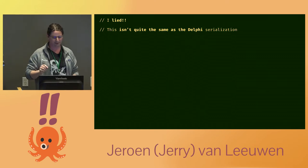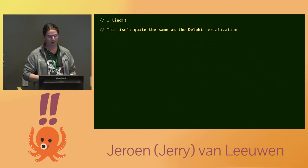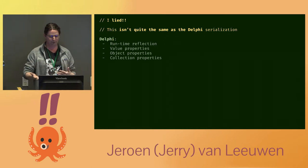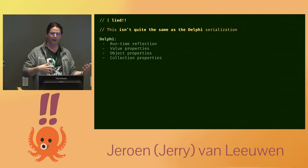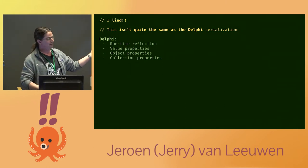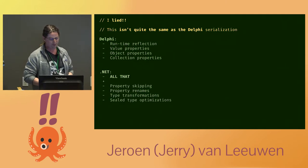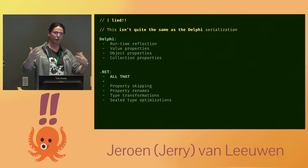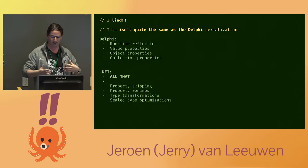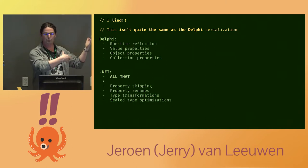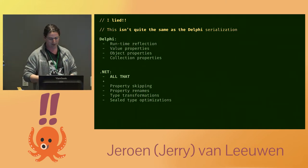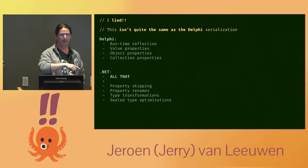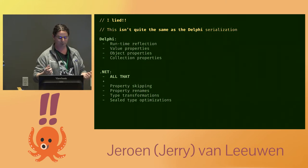I did lie a little at the start — this isn't quite the same as the Delphi serialization we started from. Delphi had runtime reflection, value properties, object properties, and collection properties. But for .NET, what I actually built on top of that included property skipping, property renames, type transformations, sealed-type optimizations, and a whole bunch of other things besides. Despite all of that, the .NET serialization was actually twice as fast as the Delphi one we started with — which had hand-tuned assembly in it. So I felt pretty good about that.